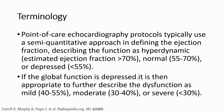In point-of-care echocardiography protocol, we typically use a semi-quantitative approach in defining ejection fraction, describing the function as hyperdynamic when ejection fraction is more than 70%, normal at about 55 to 70%, or depressed when less than 55%. If the global function is depressed, it is further described as mild at 40 to 55%, moderate at 30 to 40%, and severe when less than 30%.